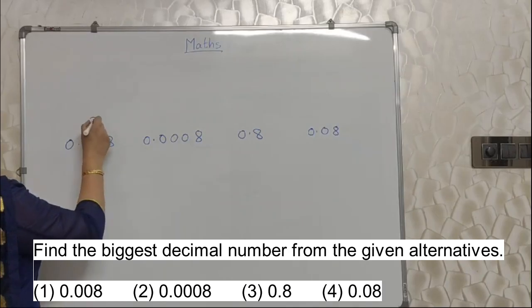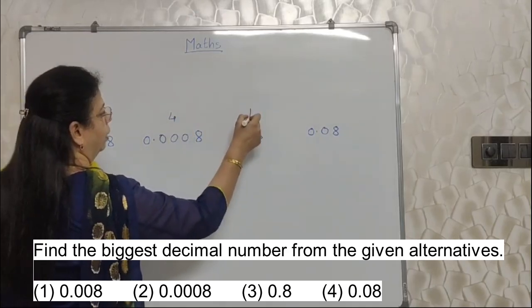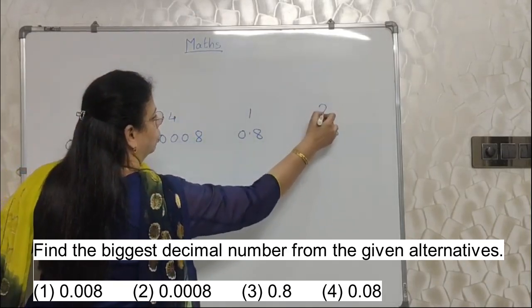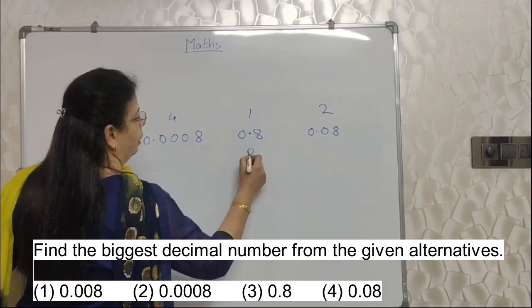Jitna number decimal se right side jaata hai, it becomes smaller and smaller and smaller. Whenever it is close to decimal, it is the biggest number. Now very easy. This number is here from decimal. 1, 2, 3. This is 1, 2, 3, 4. This is 1. And this is 1, 2. So obviously this is very close to decimal. So this is the biggest number.